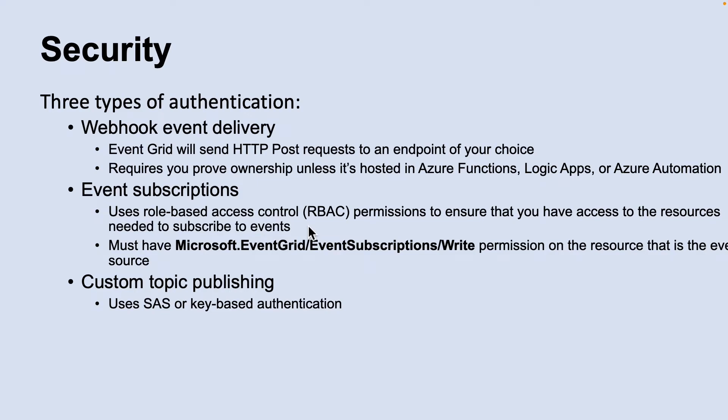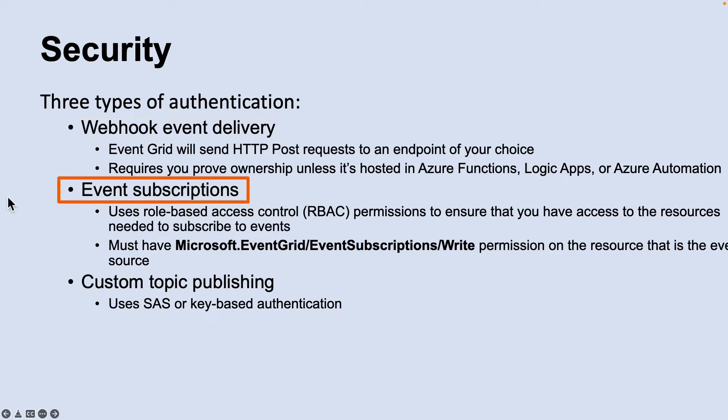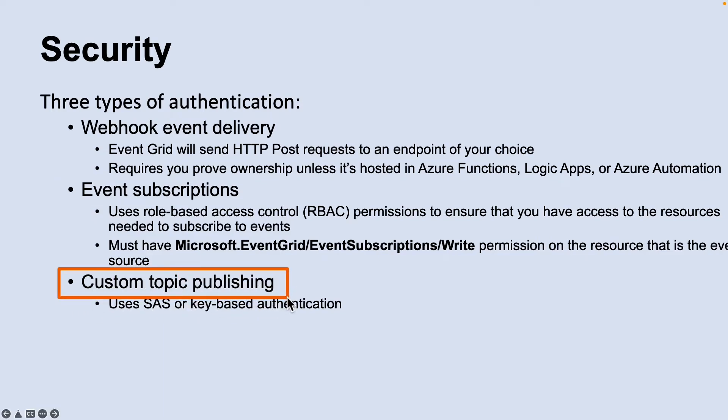Now let's look into the security part of Event Grid. There are three types of authentication. The first is webhook event delivery — webhooks are one of the many ways to receive events from Azure Event Grid. When a new event is ready, the Event Grid service posts an HTTP request to the configured endpoint with the event in the request body. The second is event subscriptions — to subscribe to an event you must prove that you have access to the event source and handler. The third type is custom topic publishing, which uses either shared access signature or key authentication. Microsoft recommends shared access signatures.